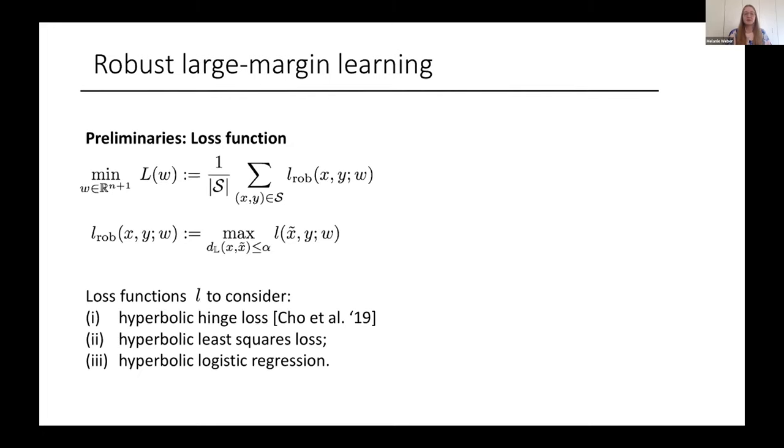Before we dive into the algorithm, just a few words on the kind of loss function that we're looking at. We are looking at a robust loss of the following form. This has a min max structure where the outer optimization problem minimizes the loss over the training set. And then the inner optimization problem considers adversarial perturbations on the hyperbolic manifold. Here D_L is the geodesic distance in the Lorentz model and alpha is our adversarial budget. This is the maximum amount that we can perturb a point in the training set on the manifold. And then for L, we consider a couple of different notions of loss. Those are in spirit similar to the corresponding loss functions in Euclidean space, just adjusted for the different geometric setting.